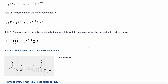Remember, electronegativity increases up and to the right on the periodic table. Looking at these two molecules, on the left oxygen bears a negative charge, but on the right carbon has a negative charge. Because oxygen is more electronegative than carbon, it is easier for it to carry a negative charge, and this resonance structure is better.